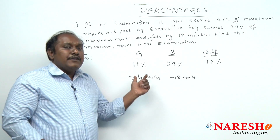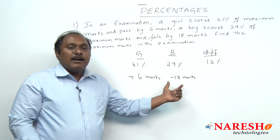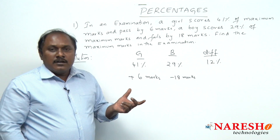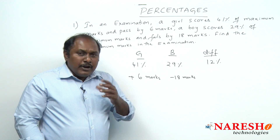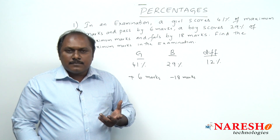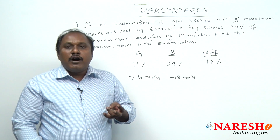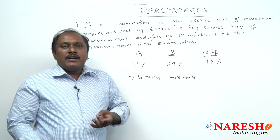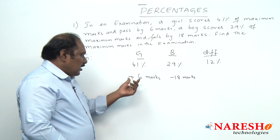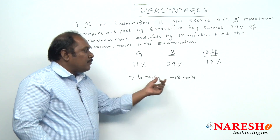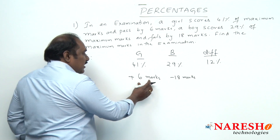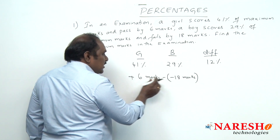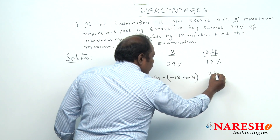What is the difference in the marks scored by girl and boy? Here many students have a confusion whether it is 12 or 24. Put a simple logical question to yourself: if a girl passed by 5 marks and a boy fails by 5 marks, the difference is 10, not 0. In the same way here, girl passed by 6 marks, boy failed by 18 marks. So the difference in marks is 6 − (−18) = 6 + 18 = 24 marks.